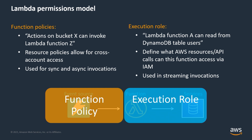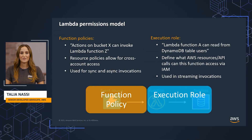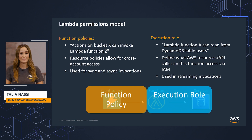Everything in the function policy happens before the function starts. Execution roles, however, define what your function can access once it's invoked. By default, you get access to Amazon CloudWatch logs for log streaming. Lambda uses the execution role to know what other resources it's allowed to access. For example, if your Lambda function needs to write something to a DynamoDB table, you need to grant permission to DynamoDB to talk to your Lambda function.